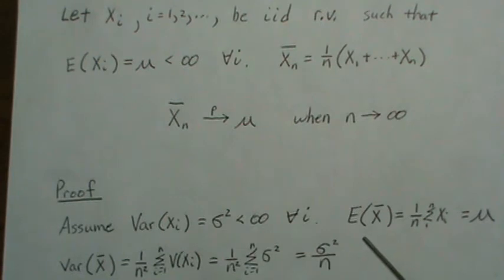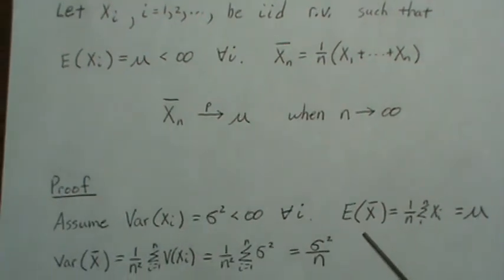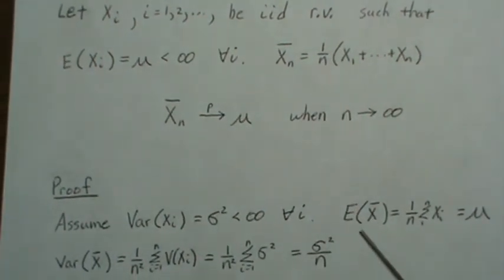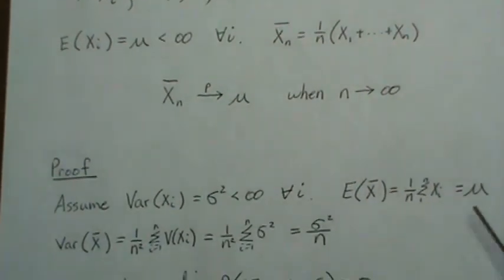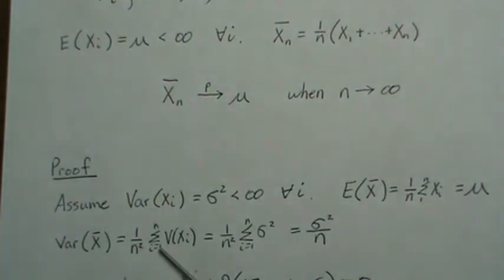So we're going to show that the expected value of X bar is just the population mean. The variance of X bar is, since variance is a linear operator, you can take it into the X's. And so this is sigma squared, and you have N of them. So it's N sigma squared. So one of the N's will cancel, leaving just sigma squared over N.